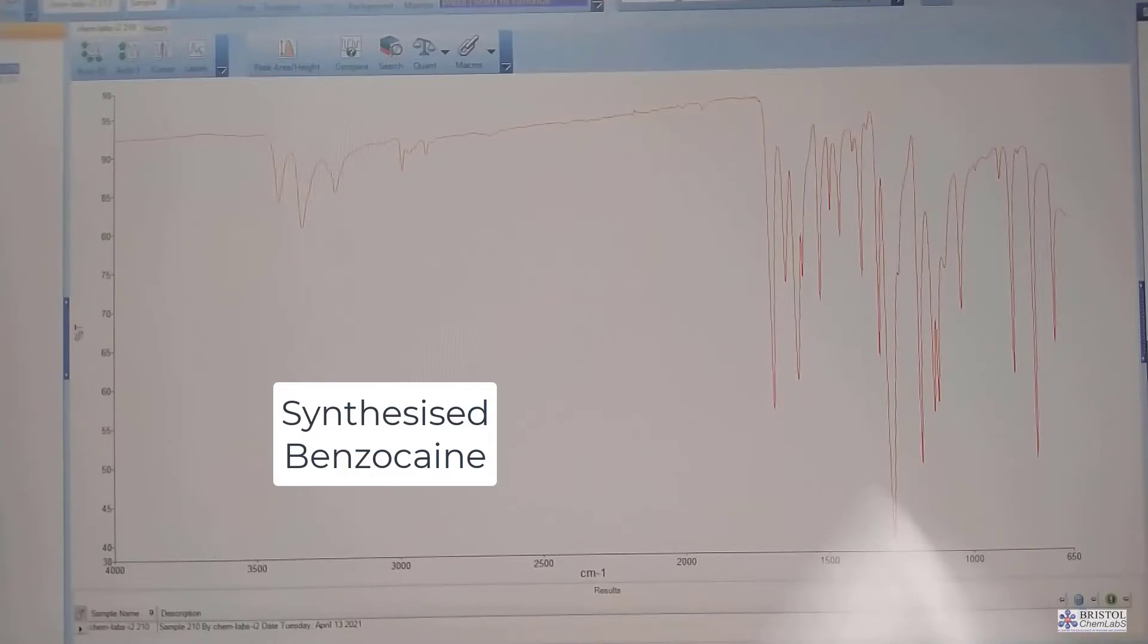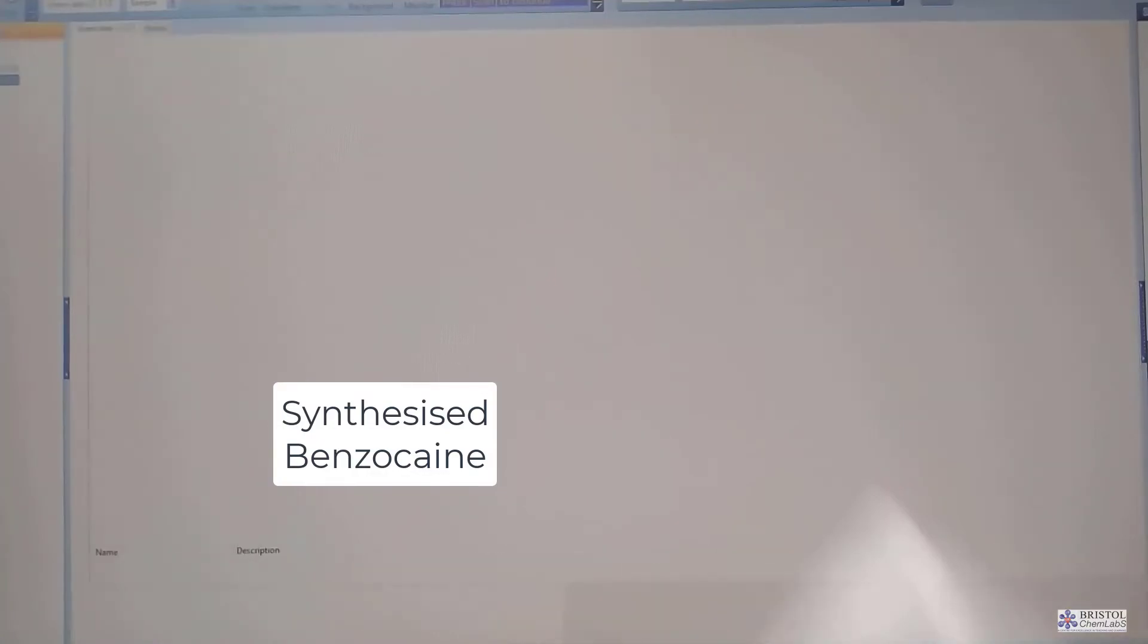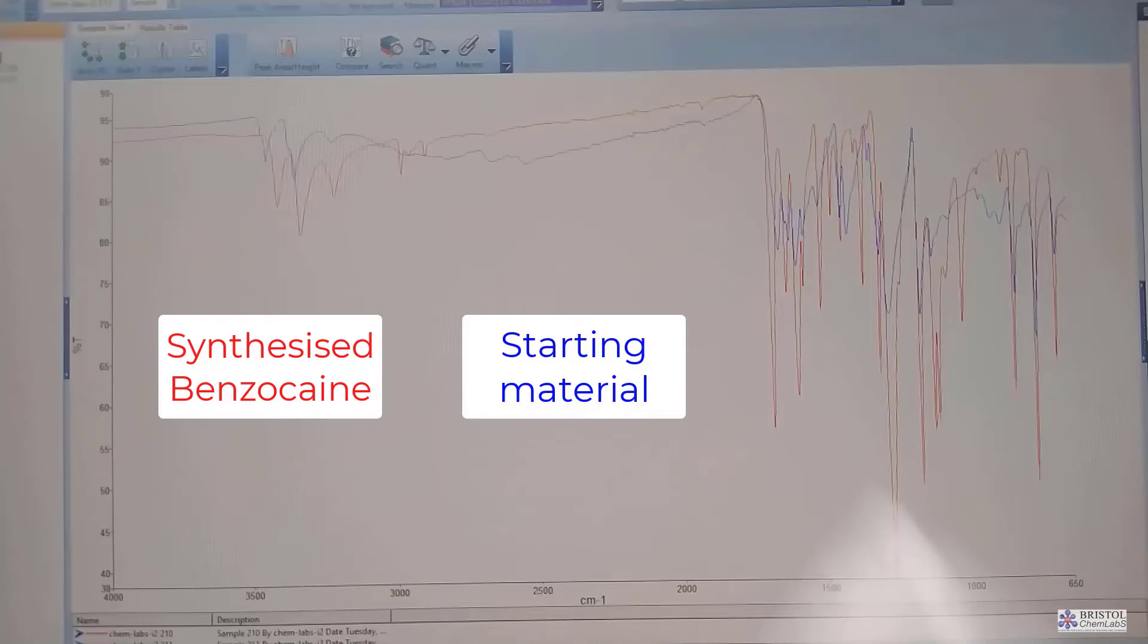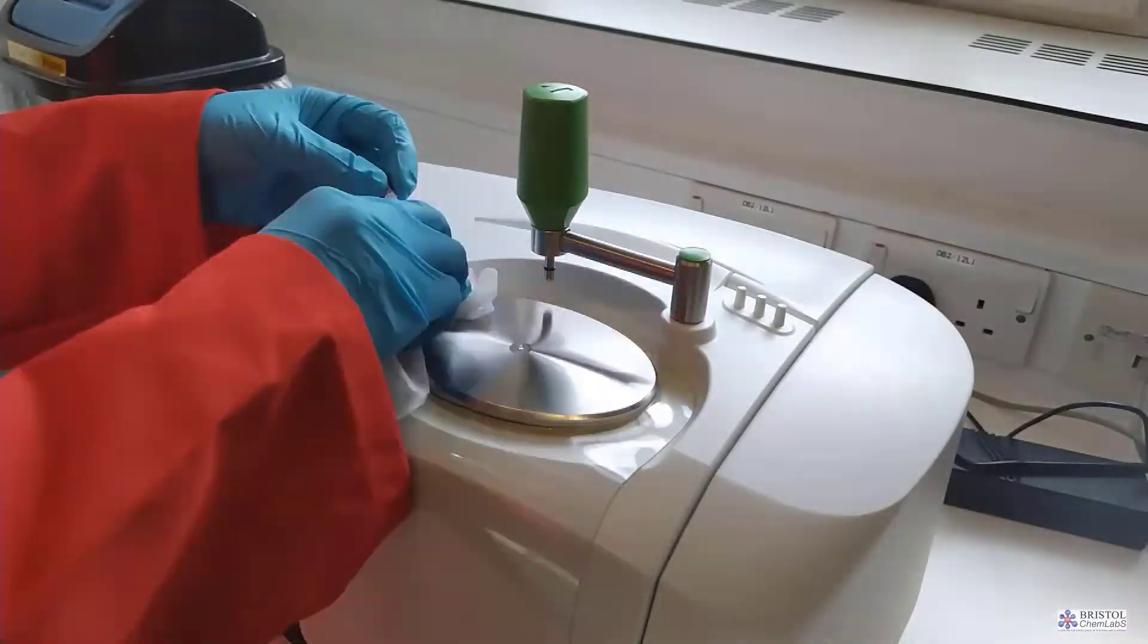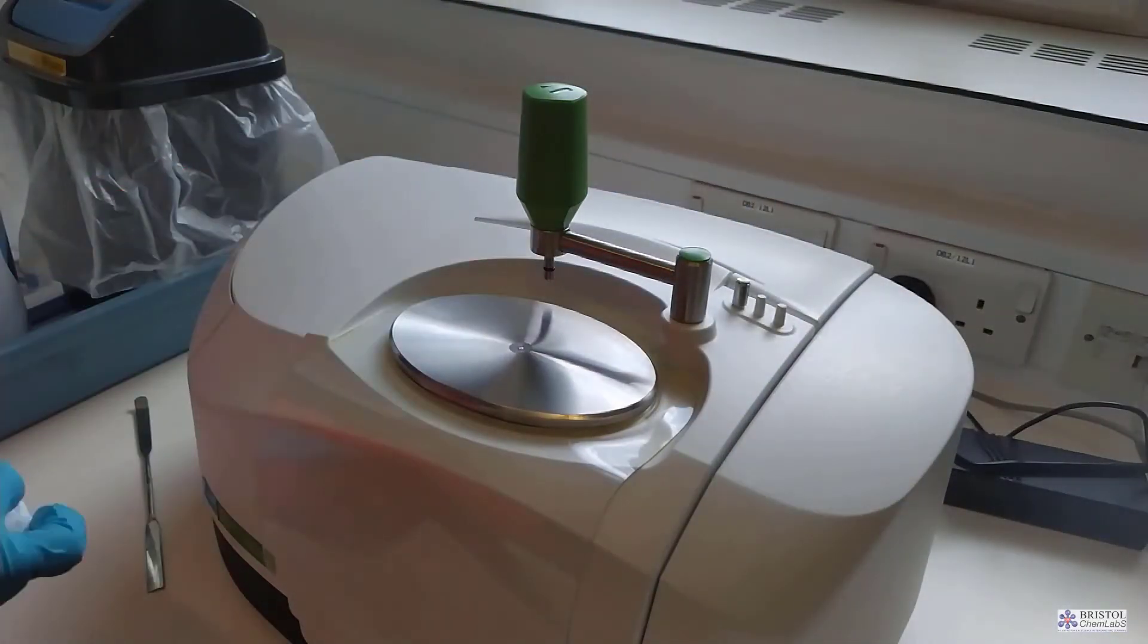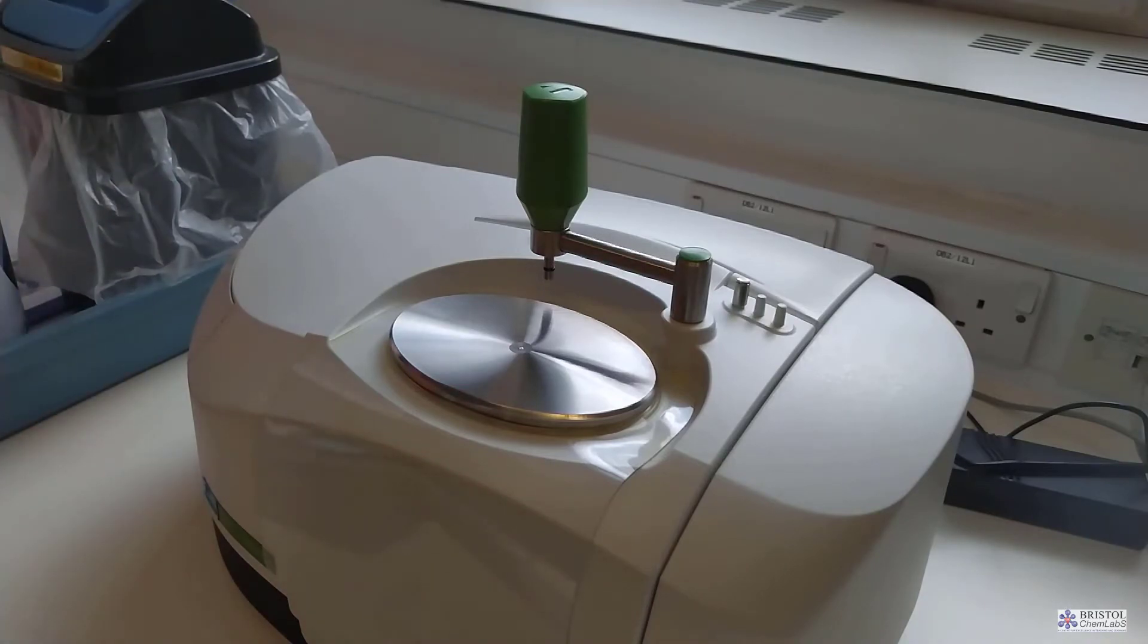We can use the infrared spectrometer to run both the sample of product and the starting material, so that comparisons can be made between the two spectra. The spectra can be printed off or saved to a memory stick or to the student's file space. Always clean up the spectrometer after use. It's only a poor chemist that leaves chemicals unlabeled in a laboratory even if it's a small sample.